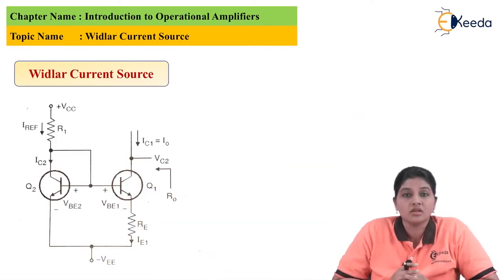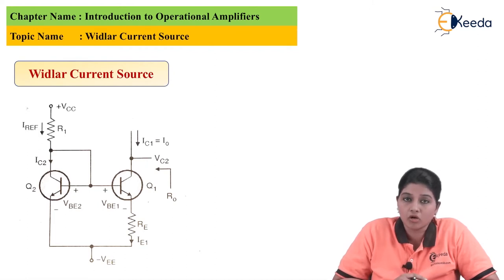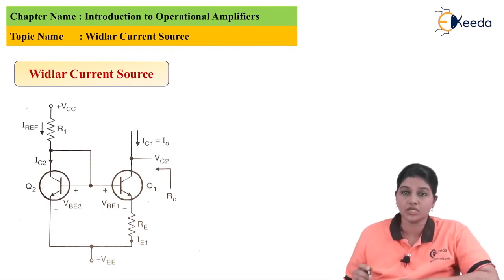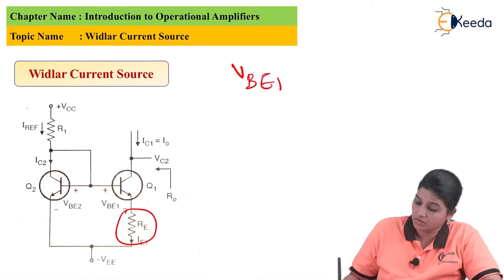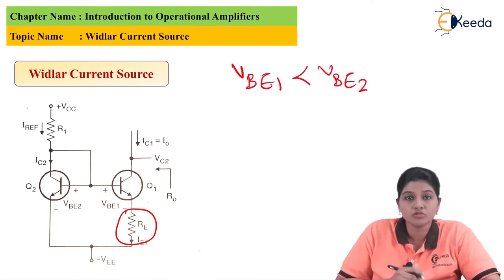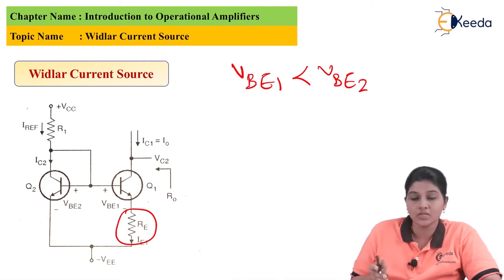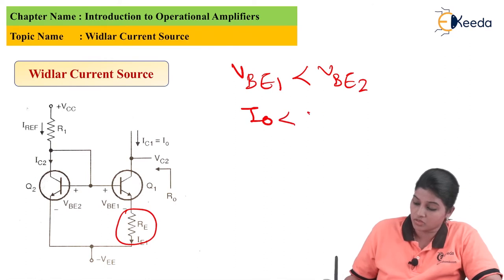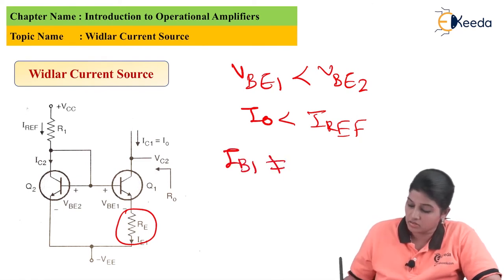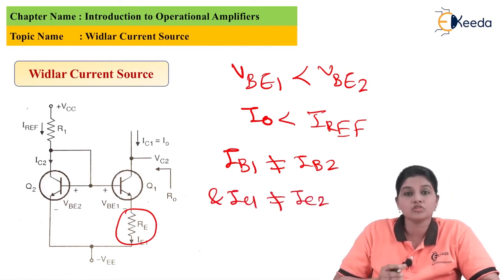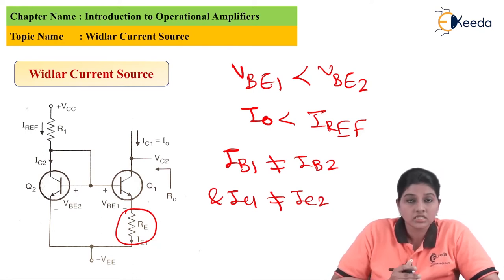The Widlar current source circuit provides a limitation on the value of resistors so that they can be easily fabricated on the chip. In the Widlar current source, the value of V_BE1 is always less than V_BE2 because of the voltage drop across resistor R_E. Because of this, the output current I_O is always less than the reference current. Also, I_B1 is not equal to I_B2 and I_C1 is not equal to I_C2. Because of these asymmetrical values of base and collector current, the Widlar circuit is also called a current scaler circuit rather than a current mirror circuit.